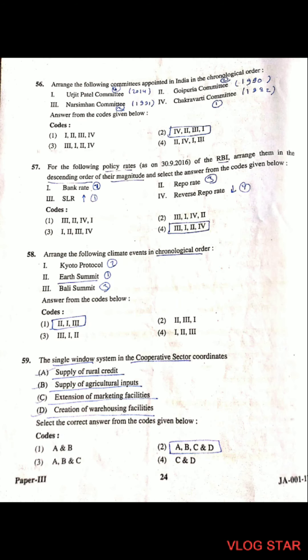Question 56: Arrange the following committees in chronological order. The correct sequence is 4, 2, 3, 1. First came the Chakravarty Committee in 1982, then the Goipuria Committee in 1990, then the Narasimham Committee in 1991, and lastly the Urjit Patel Committee in 2014.